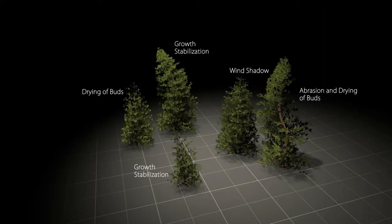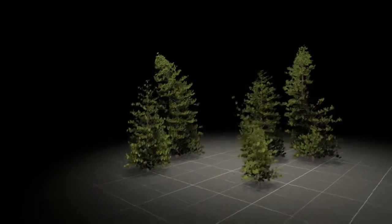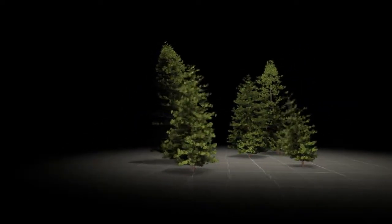This sequence shows a group of pine trees processed with our system. As can be seen, the models suffer from a variety of effects caused by a wind field.